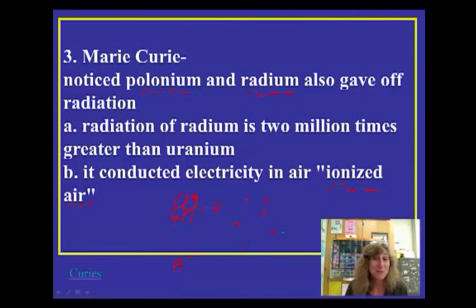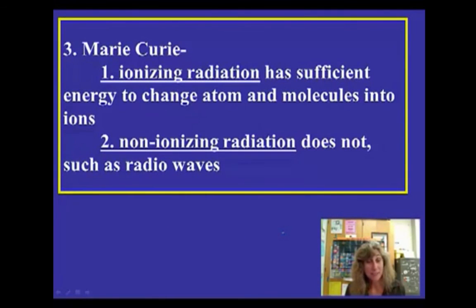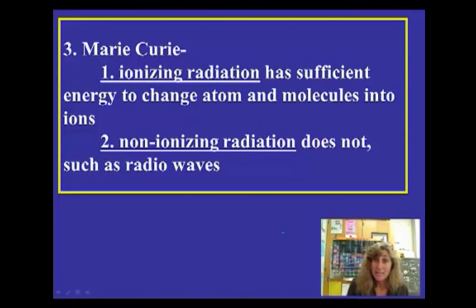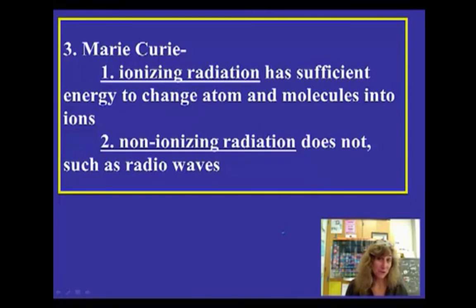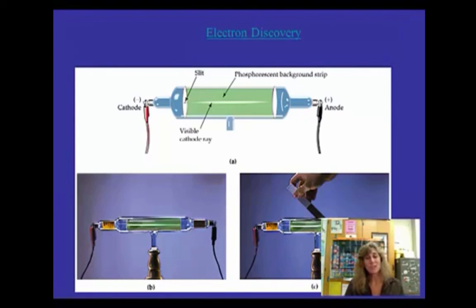It wasn't until many years later that we realized the biological hazards of radium. It was a sad end for the Curies, Becquerel, and Röntgen, who all died of different types of cancers. Marie had leukemia, as did her daughter. Pierre Curie was the only one who didn't die of cancer — he was struck by a horse and cart one rainy night in Paris. The Curies get credit for their work with radiation and for coining the term 'ionizing radiation,' while Becquerel was the first to actually see the radiation. Okay, then we have J.J. Thomson — but I'm stopping there and letting you answer a few questions. See you in class tomorrow.